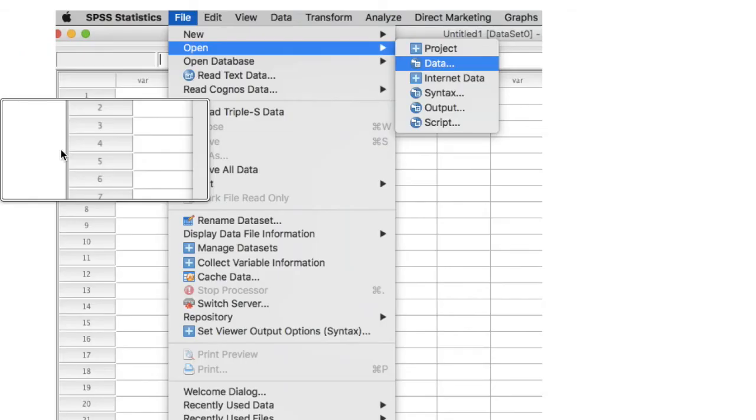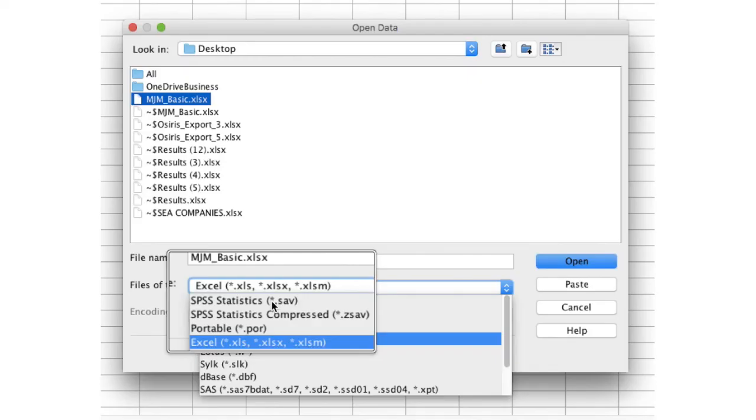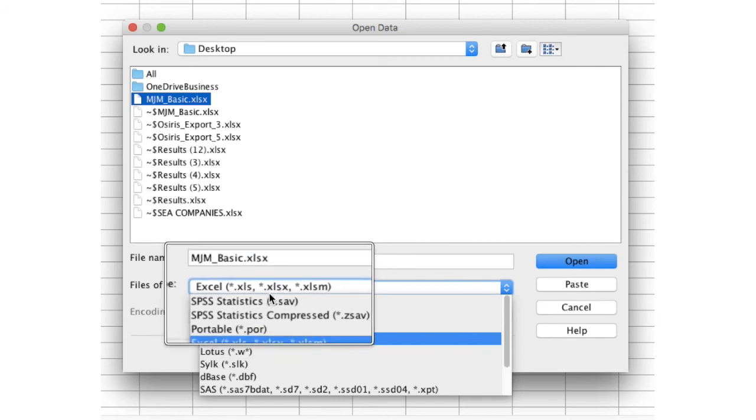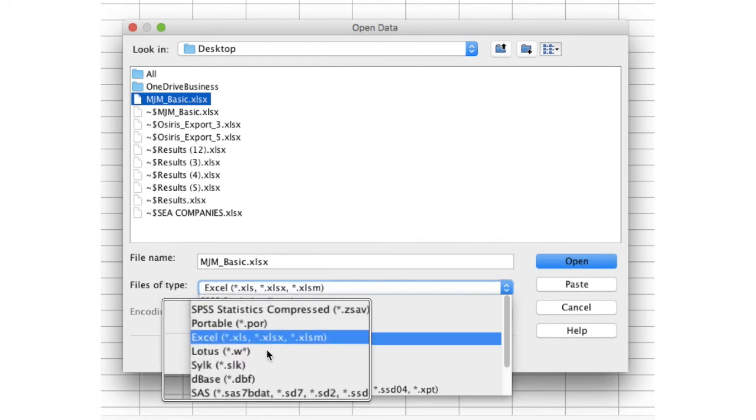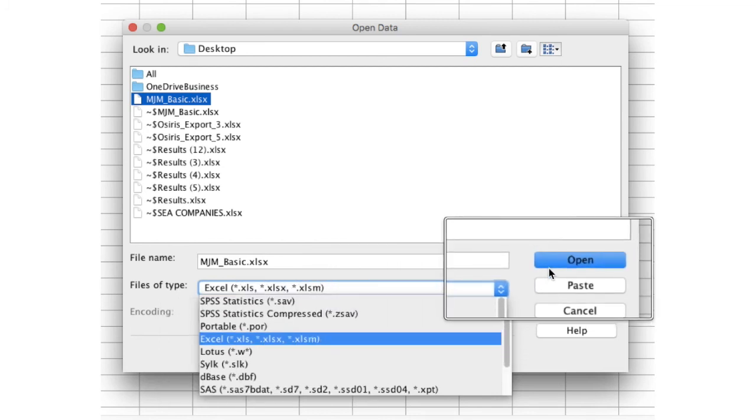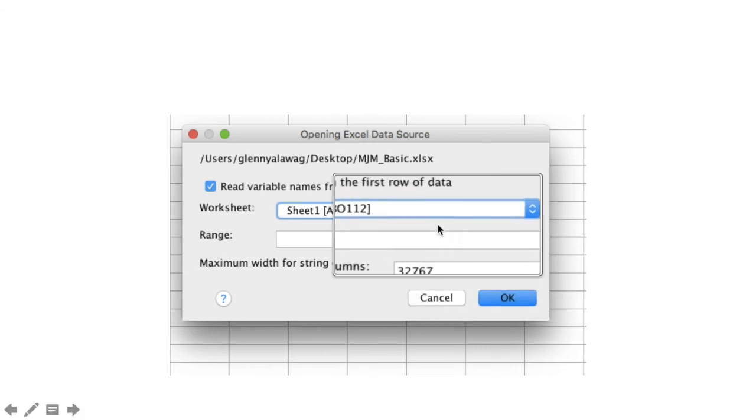From SPSS, select File, Open, Data. Look for the location of the Excel file. But notice down here that the default type is an SPSS file, so we need to change this to Excel. Then find your file and click Open.